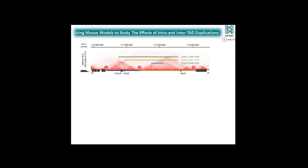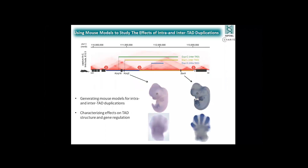Using targeted approaches with the traditional loxP-Cre recombination system and also CRISPR-Cas, we generated these duplications in the mouse. We then studied the changes in TAD structure and the effect on gene regulation, and I'll show you mainly results generated from limb buds. We used the limb bud as a developmental system and checked these three types of mouse mutants in limb bud tissue, because both genes — KCNJ2 and Sox9 — are expressed there.